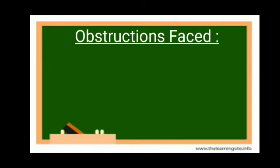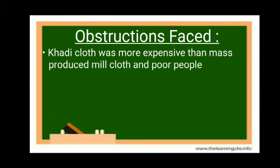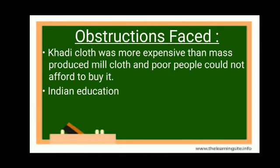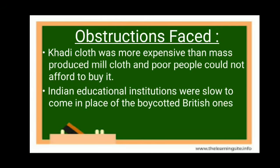Obstruction phase: There were some limitations to continuing this movement in the towns. Khadi cloth was more expensive than mass-produced mill cloth, and poor people could not afford to buy it. This is one reason khadi was replaced by British mill cloth. Second, Indian educational institutions were also slow to come up in place of the boycotted British ones. Parents worried about students and teachers sitting at home, so they began trickling back to government schools and lawyers rejoined work at government courts.